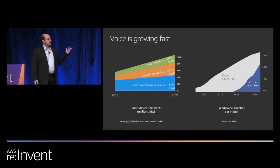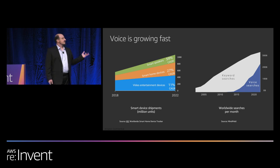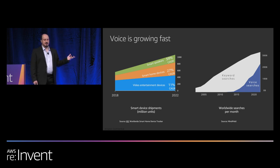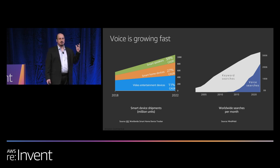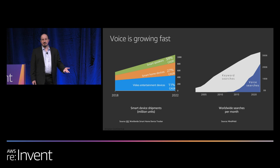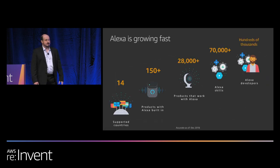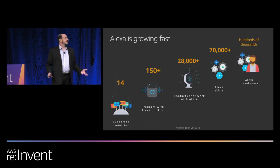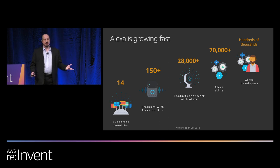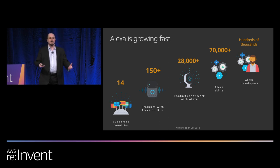Let me give you a couple of numbers. Voice control is growing fast, and it's not only about smart speakers. About half of the AVS devices launched last year were in different categories, such as smart home. Alexa is growing fast — we now have tens of thousands of products that work with Alexa, and hundreds of thousands of developers, such as yourselves, working on Alexa devices.